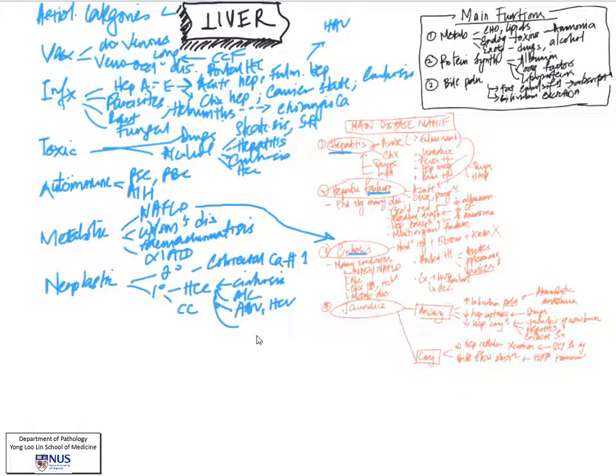Other predisposing conditions include some metabolic diseases and toxins which can be ingested externally, such as aflatoxins. This was covered in the chapter on neoplasm regarding pathogenesis of malignant transformation.